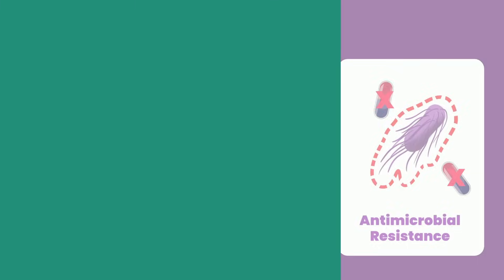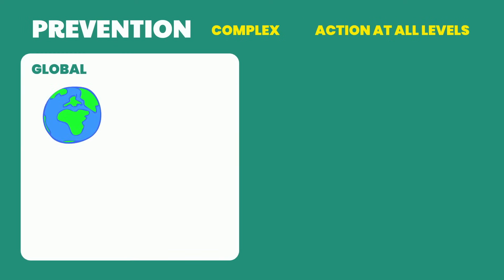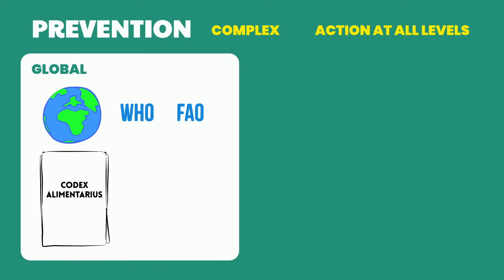Let's talk about prevention. Food safety is a complex problem that requires action at all levels. At a global level, there are international agencies like the World Health Organization and the Food and Agriculture Organization that work on initiatives like the Codex Alimentarius — a collection of international standards, guidelines, and codes of practice. InfoSAN is a global network of national food authorities that shares information and collaborates on food safety issues.